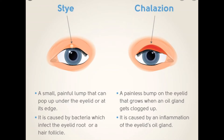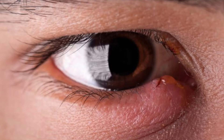Now let me tell you some symptoms of stye and chalazion. Stye symptoms can include a very painful red bump along the edge of the eyelid at the base of the eyelashes. It may make the entire eyelid swell. Usually a small pus spot at the center of the bump can be seen. You may feel like something is in your eye, and a scratchy feeling in the eye is also one of the symptoms. It can also cause light sensitivity, and there may be crustiness along the eyelid margin.